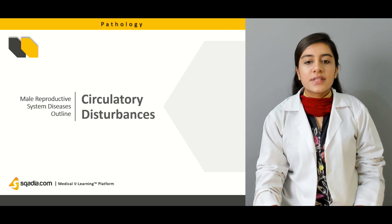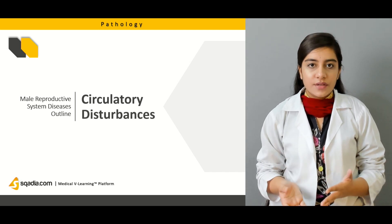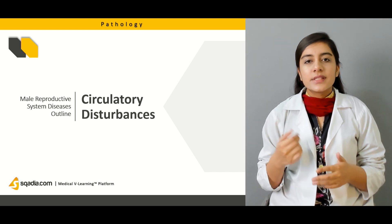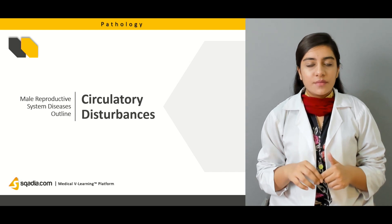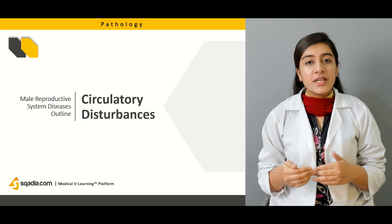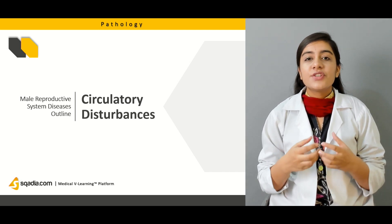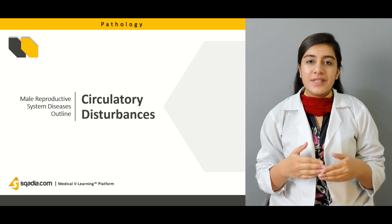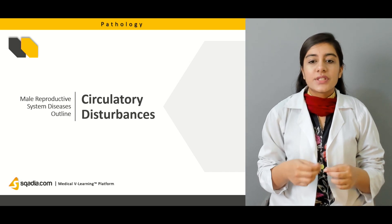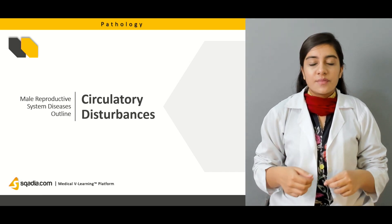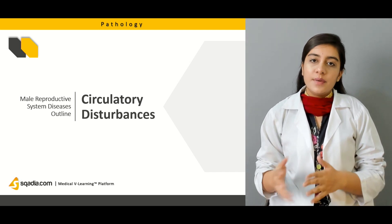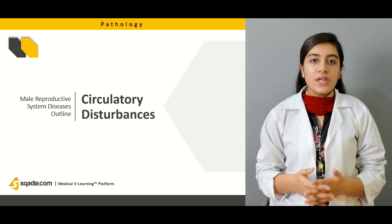After scrotal masses, we will be talking about circulatory disturbances. We will discuss two important disturbances: the lymphatic and the venous disturbances. These are secondary complications of different diseases taking place in the pelvic region. We will cover what those diseases are, how they cause circulatory disturbances leading to scrotal edema, and how they appear.